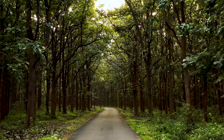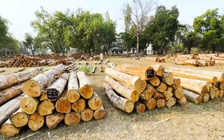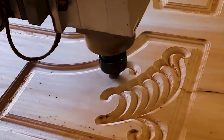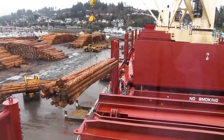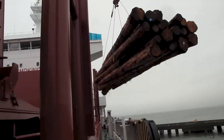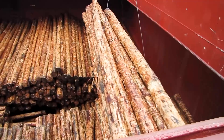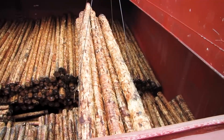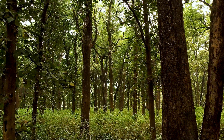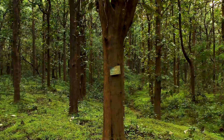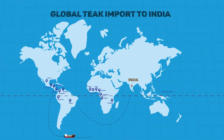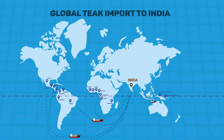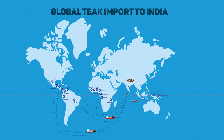India is one of the largest consumers of wood and wood products worldwide. Of the total imports, 15% is teak wood, making India the world's largest importer of teak. Though India has the largest area of natural teak forests, annually 1 million cubic meters of teak wood is being imported from about 17 different countries.